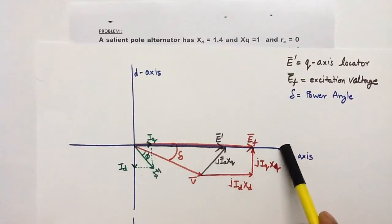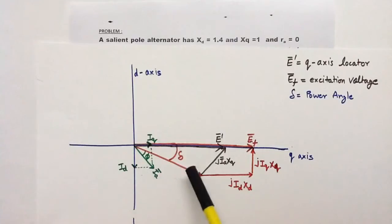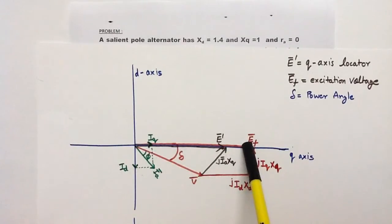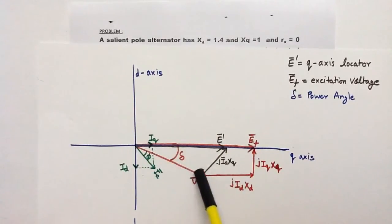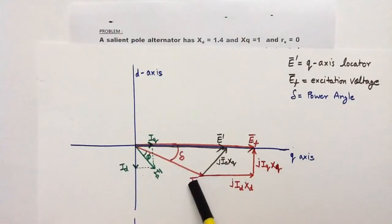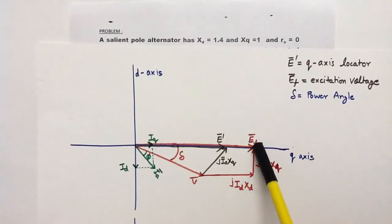This axis is the quadrature axis and the vertical axis is the direct axis. Here you can see the red line — this red line is the excitation voltage. If you add j·id·xd and j·iq·xq with the terminal voltage, you will get the excitation voltage: V plus j·id·xd plus j·iq·xq equals the excitation voltage.